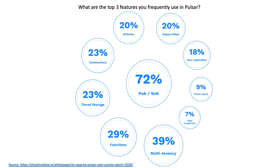Of the top use cases, PubSub was the dominant one, but many other features have also been used frequently. Here at Overstock, we heavily depend on the multi-tenancy aspect and also make use of functions and many of the other features as well.